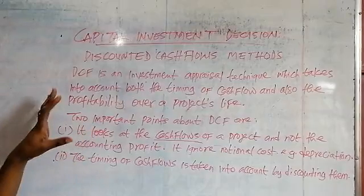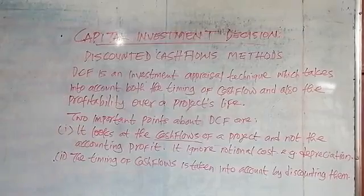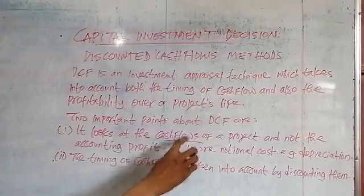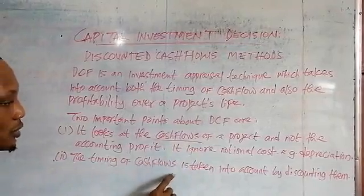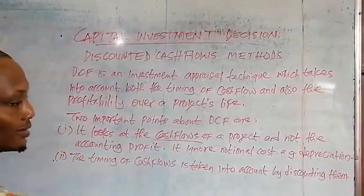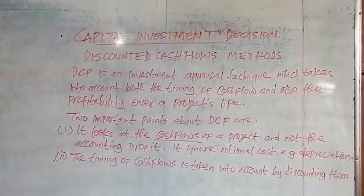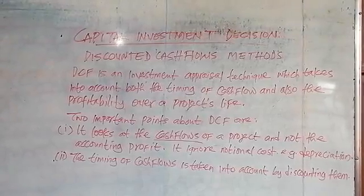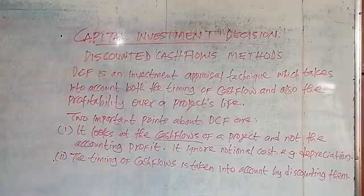So that is basically what discounted cash flow is talking about. It takes cognizance of cash flow and not accounting profit, and it also takes cognizance of discounting — the time value of money, the timing of cash flow. There are also some assumptions that you normally make under discounted cash flow.